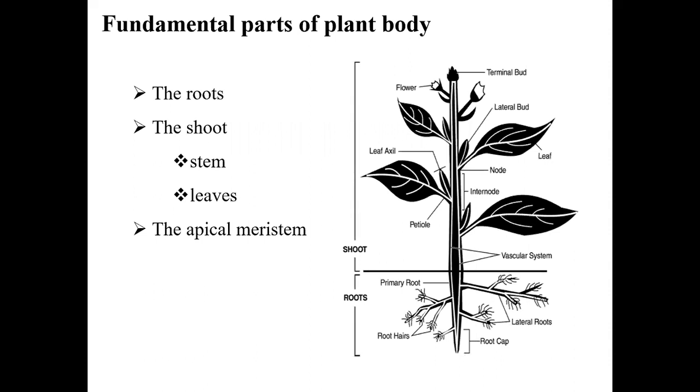The first part of the angiospermic plant body is the root. Roots anchor the plant in the soil, take up water and minerals from the soil, and transport them to the upper portions of the plant.